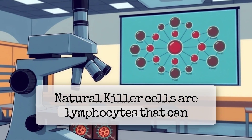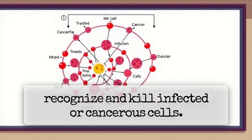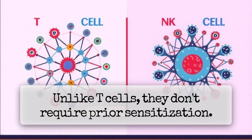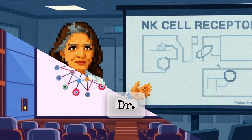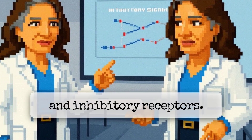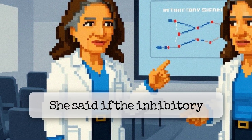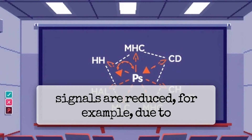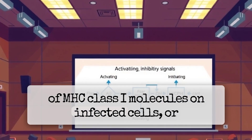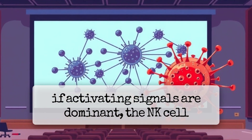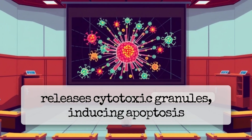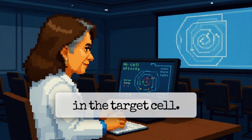Natural killer cells are lymphocytes that can recognize and kill infected or cancerous cells. Unlike T-cells, they don't require prior sensitization. NK cells possess activating and inhibitory receptors. If the inhibitory signals are reduced — for example, due to downregulation of MHC class I molecules on infected cells — or if activating signals are dominant, the NK cell releases cytotoxic granules, inducing apoptosis in the target cell.